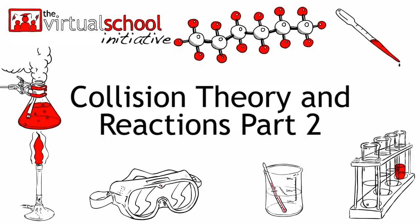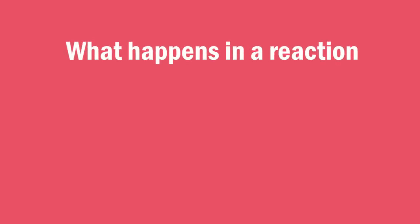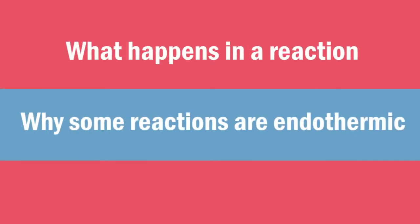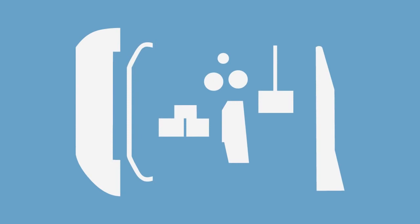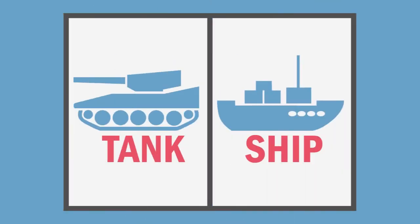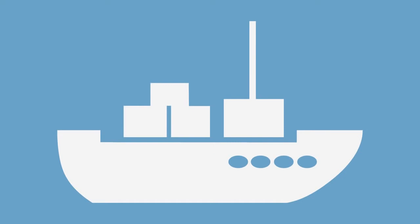Collision Theory and Reactions 2. In this video you are going to learn what happens in a reaction, why some reactions are endothermic and some exothermic. When I was young I had a model set. Inside the box were the various components and an instruction book containing 80 models to build. On the first day I built a ship.